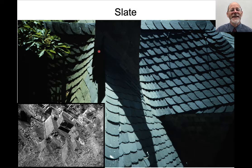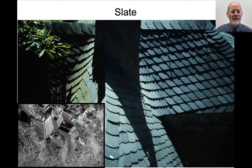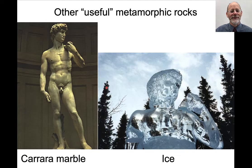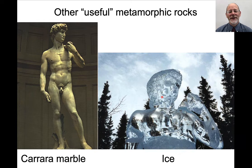Let's look at some metamorphic rocks. A slate is a very low-grade metamorphic rock — incipiently crystallized with characteristic slaty cleavage, meaning it splits into thin plates that can be used in construction. Marble is a metamorphic rock, as in Michelangelo's David. Ice can also be considered metamorphic if it forms by compaction and recrystallization of snow — people talk about snow metamorphism. Ice that crystallizes out of a lake would be considered igneous, unless it later recrystallizes.